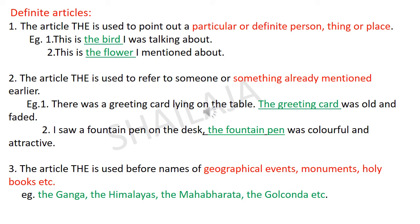The article 'the' is used before names of geographical features, monuments, holy books, etc. For example: the Ganga, the Himalayas, the Mahabharata, the Golconda Fort, etc.